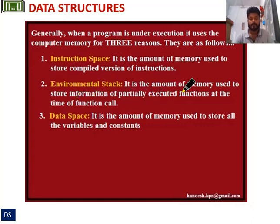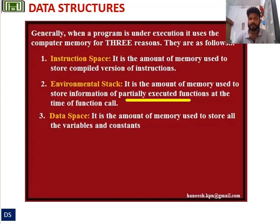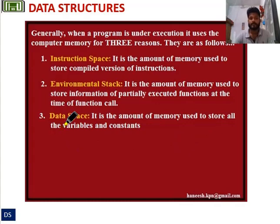Environmental stack space is the amount of memory used to store information of partially executed functions at the time of a function call. Data space is the amount of memory used to store all the variables and constants. So these are the three reasons a program uses computer memory during execution: instruction space, environmental stack space, and data space.